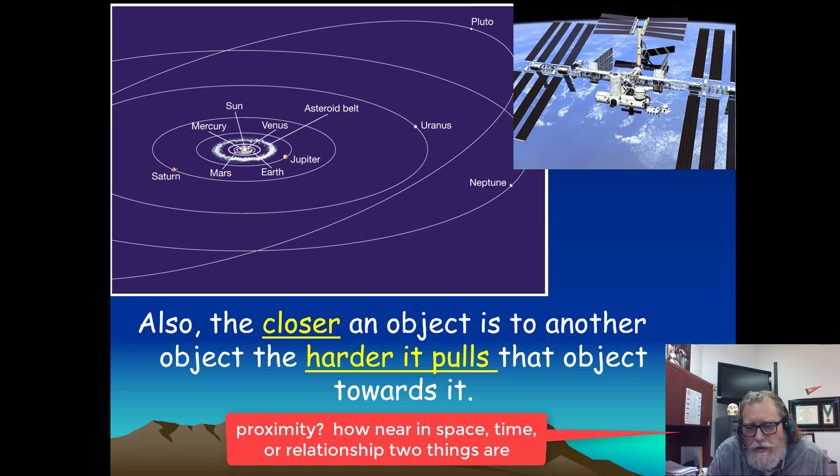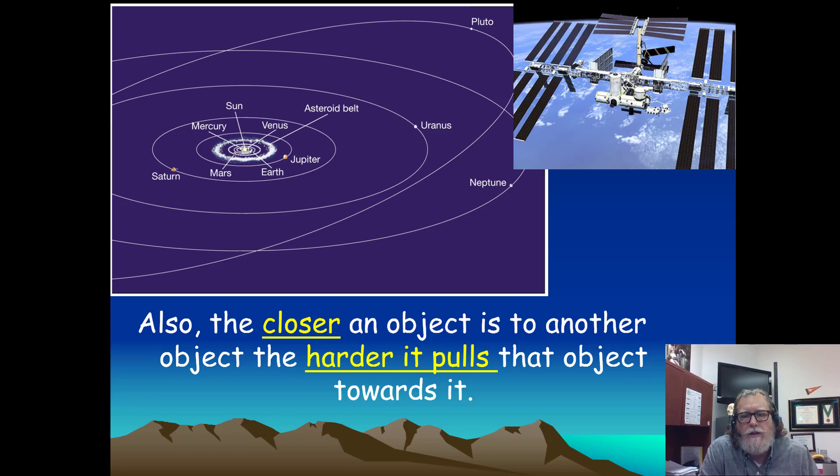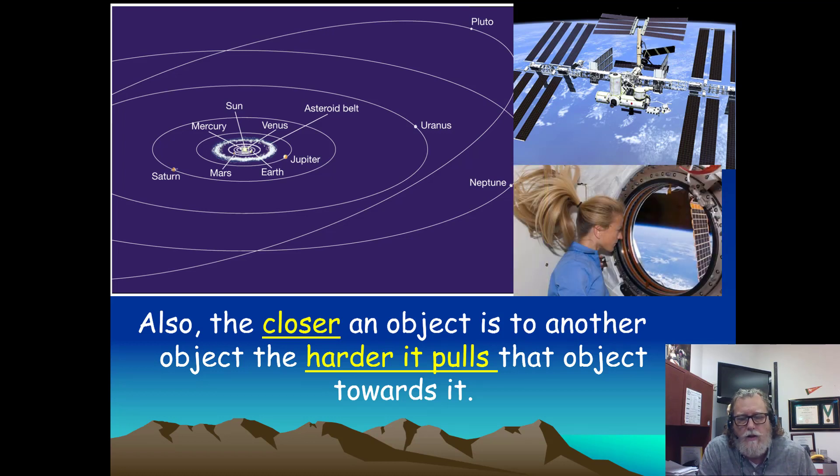The International Space Station is orbiting the Earth, and because it is not on the ground close to the Earth, it's actually in almost a weightless state. So this astronaut here, you can see her hair is floating up, and it's basically experiencing a lack of gravity. And that's because they are so far from the planet's surface that there's not much gravitational pull exerted at that distance, not compared to being on the surface of the Earth.